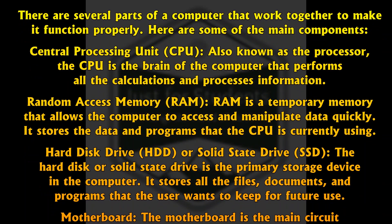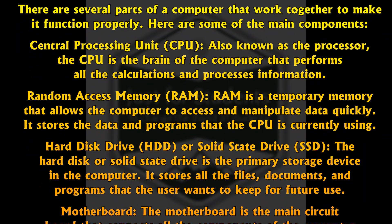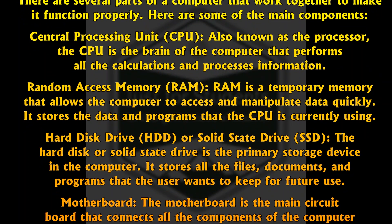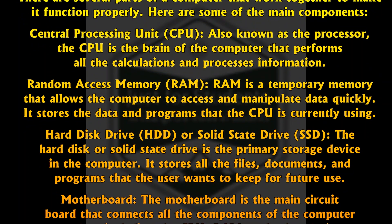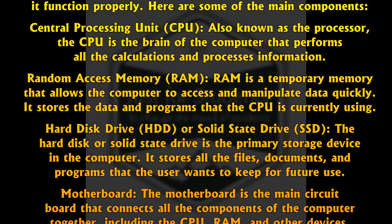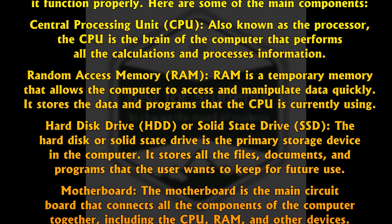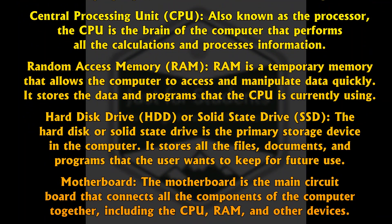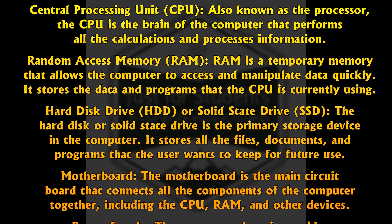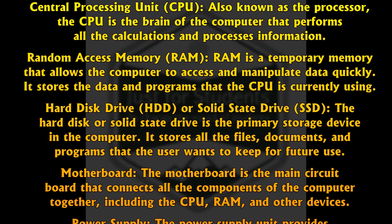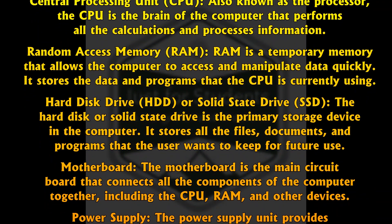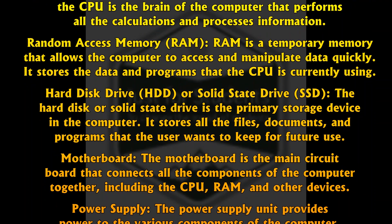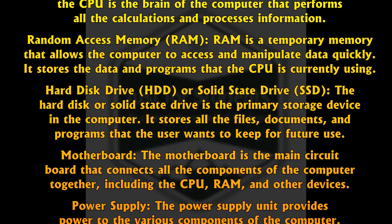Hard Disk Drive (HDD) or Solid State Drive (SSD): the hard disk or solid state drive is the primary storage device in the computer. It stores all the files, documents, and programs that the user wants to keep for future use. Motherboard: the motherboard is the main circuit board that connects all the components of the computer together, including the CPU, RAM, and other devices.